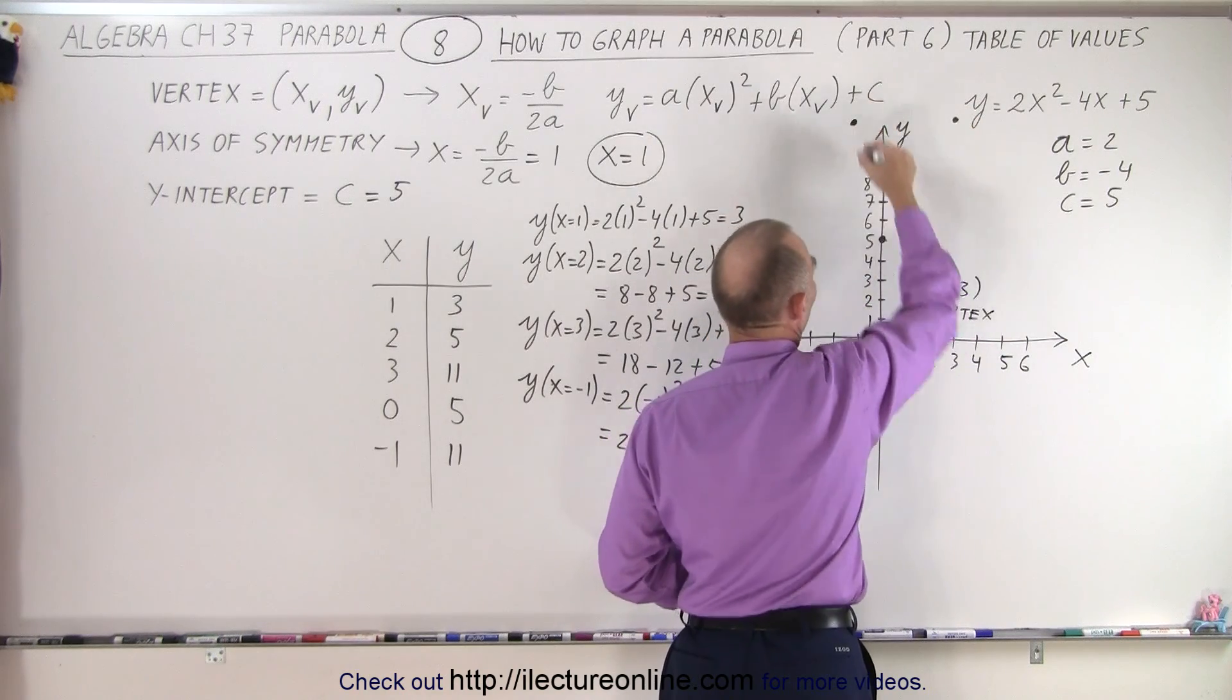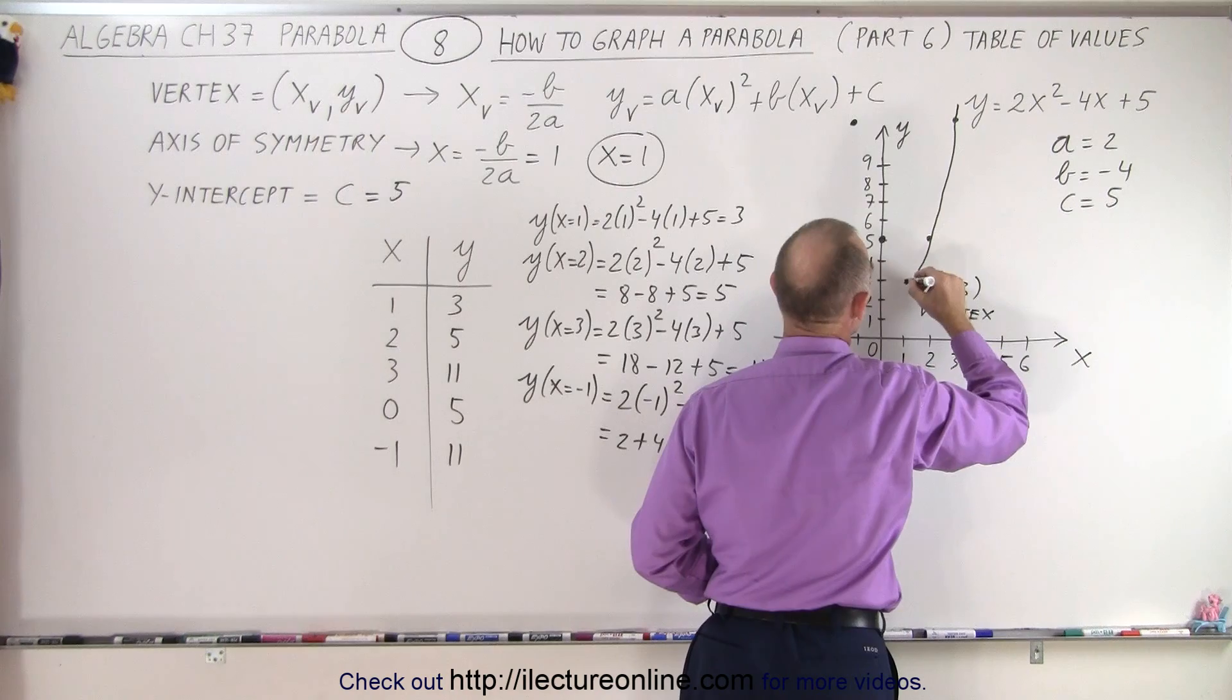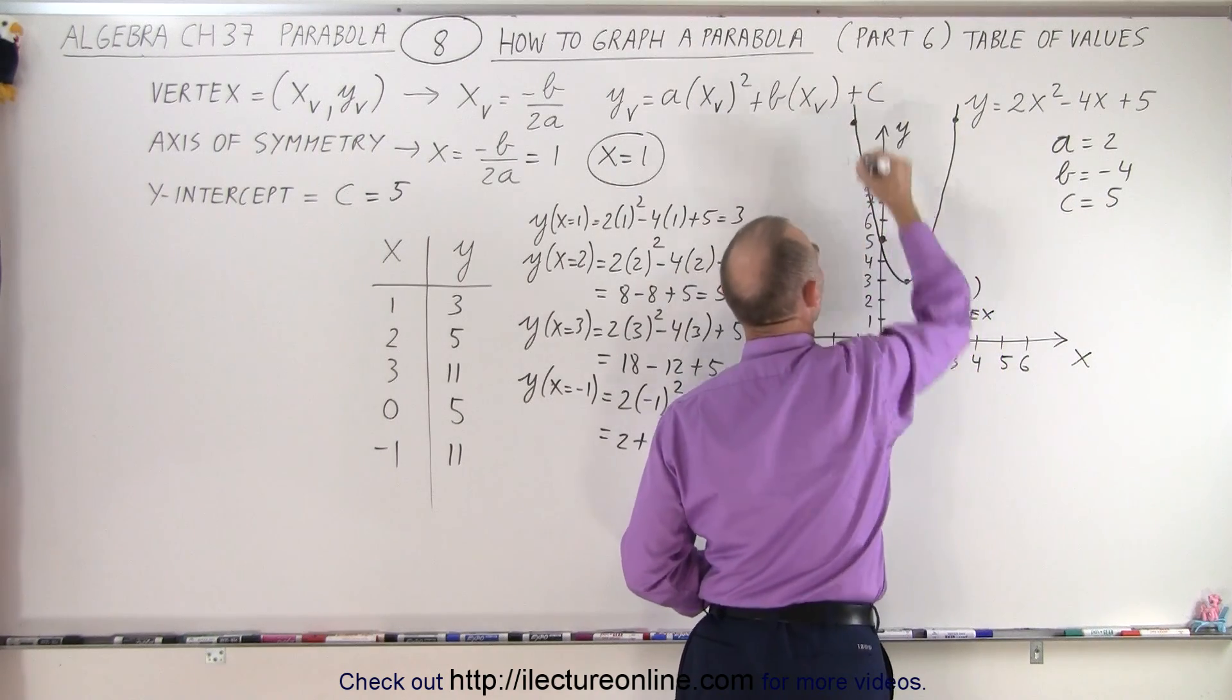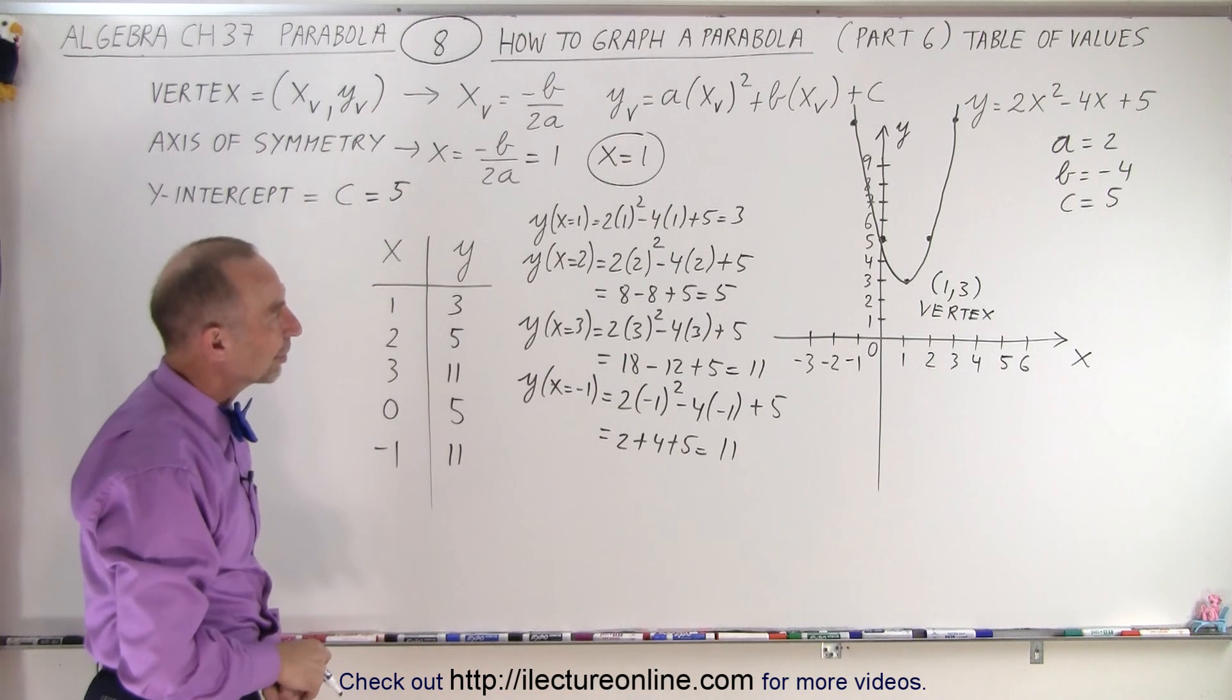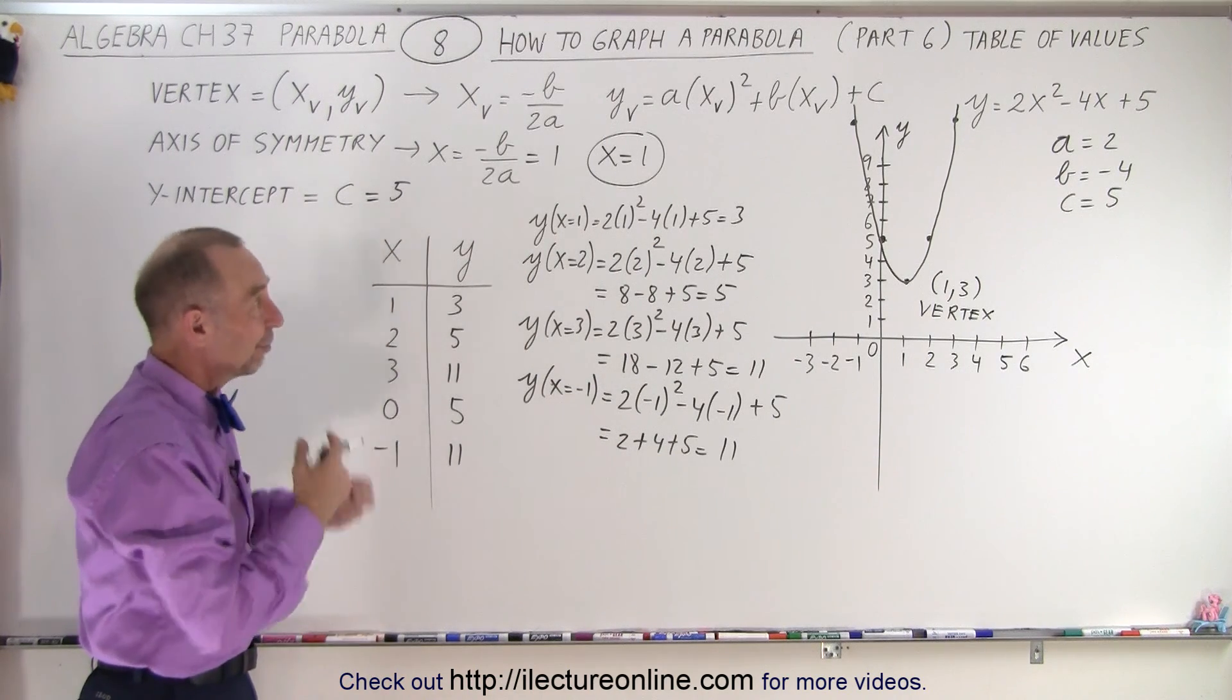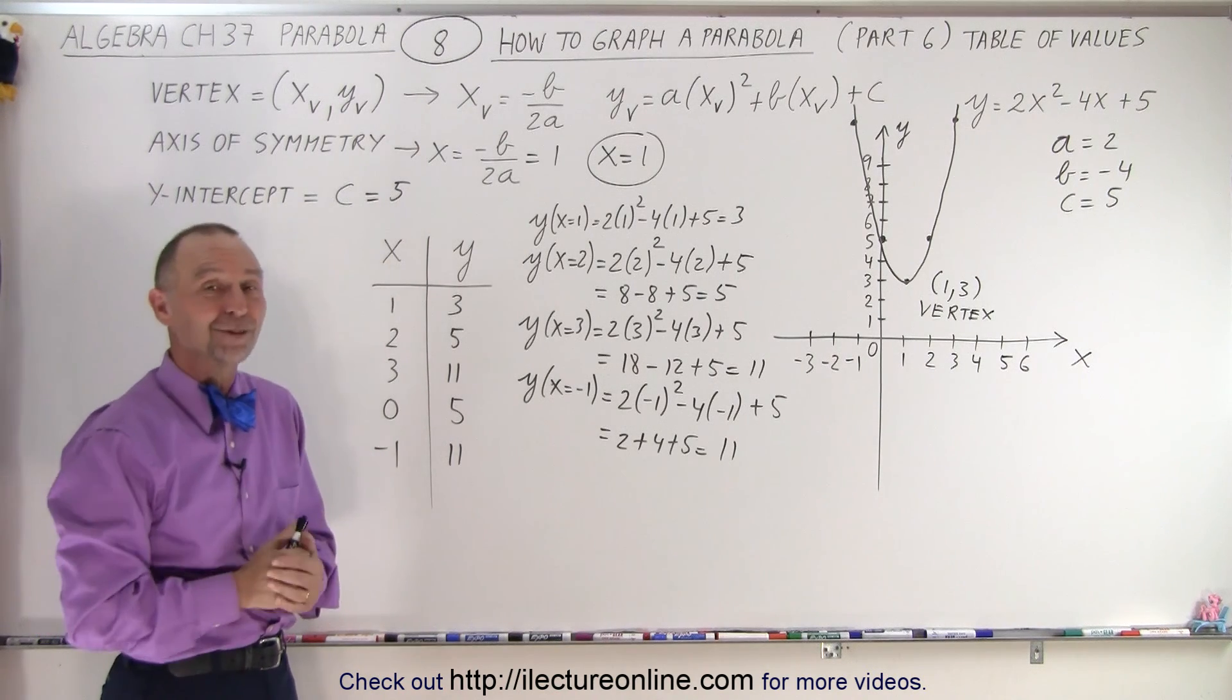So notice we now have these five points, which we can connect with a nice smooth curve like this. And there is our parabola by using a table of values. All we really needed was 5 points, and that's sufficient to draw a fairly decent parabola. And that is how it's done.